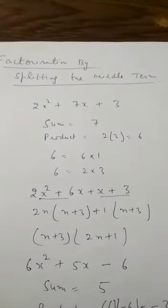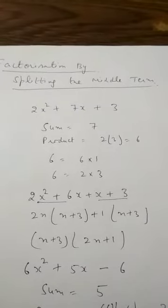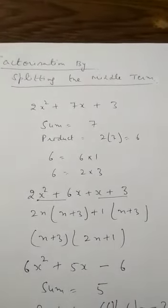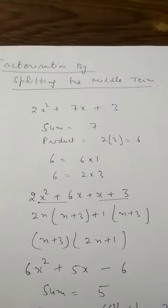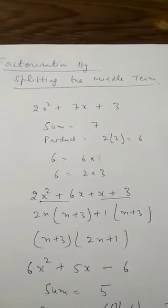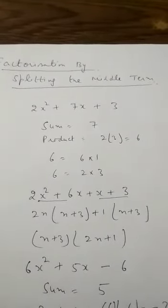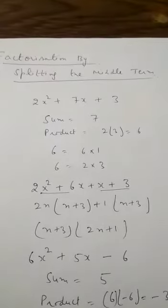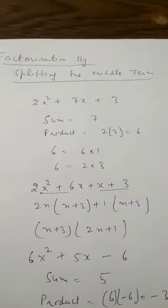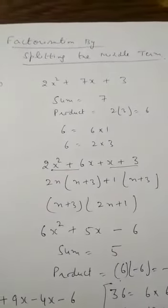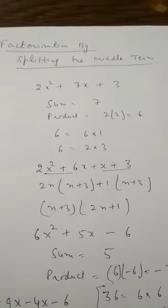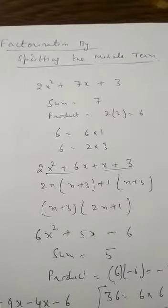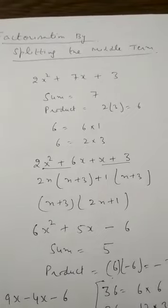We factorize the product 6: it can be 6 × 1 or 2 × 3. Checking: 2 + 3 = 5, not 7. But 6 + 1 = 7 and 6 × 1 = 6, satisfying both conditions. So we split: 2x² + 6x + x + 3. Taking 2x common from the first two terms gives 2x(x + 3), and taking 1 common from the last two gives 1(x + 3). Therefore x + 3 is the common factor, and the factors are (x + 3)(2x + 1).